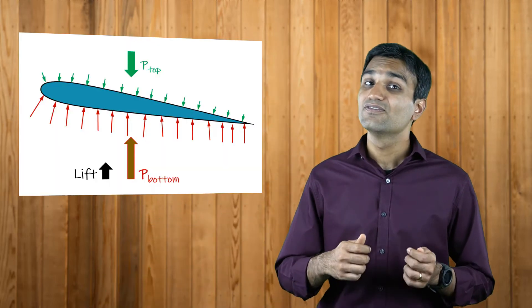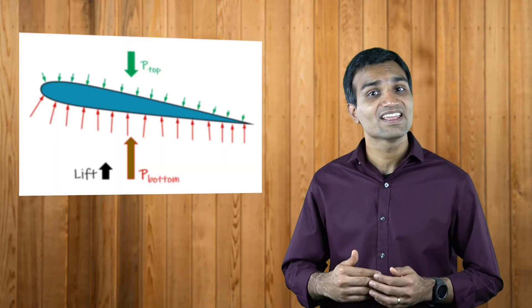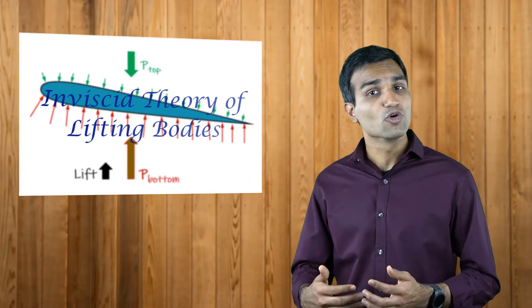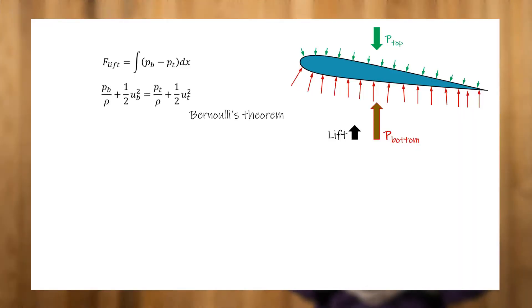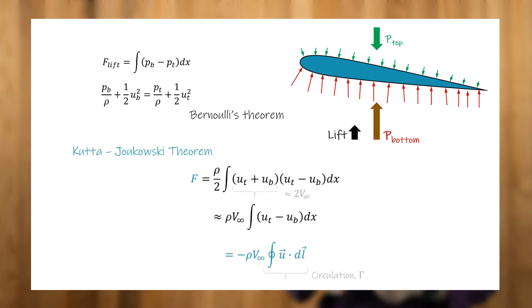Historically, before we had the computational methods and the computing resources that are available today, physicists and mathematicians were able to design airfoils to generate larger lift force using the inviscid theory of lifting bodies such as thin airfoils. One such early method was the Kutta-Joukowski theorem which was developed separately by Martin Kutta and Nikolai Zhukovsky from the famous Bernoulli's theorem. They assumed the velocities at the top and bottom of a thin airfoil to be equal to the free stream velocity and defined a relationship between the lift force and circulation.